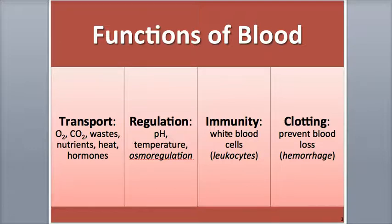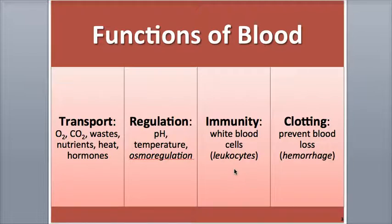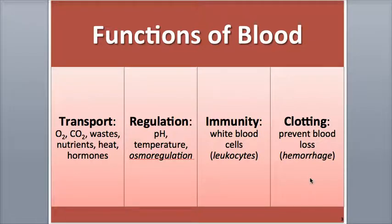Blood plays a role in the immune system through its white blood cells, called leukocytes. The prefix leuco means pale. These cells defend the body against pathogens, which are disease-causing organisms such as viruses, bacteria, or parasites, by consuming and destroying them through phagocytosis. Blood also contains a variety of proteins such as antibodies and interferon that defend the body against pathogens. Blood can also reduce its loss from the body, called hemorrhaging, as a result of injury through clotting. During clotting, blood thickens up into a gel-like consistency by using its plasma proteins and specialized cells called platelets.